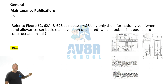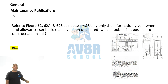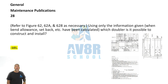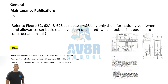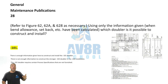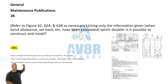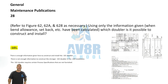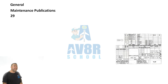Number 28: Using only the information given in the same figures, when bend allowance and setbacks have been calculated, which doubler is it possible to construct? The answer is the dash-101 doubler. Every answer is in these figures — learn to read them. If you need the figures, download them, print them out.